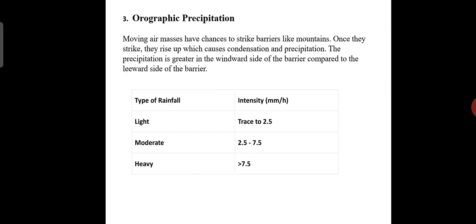Orographic precipitation. Moving air masses have a chance to strike barriers like mountains. Once they strike, they rise up, which causes condensation and precipitation. The precipitation is greater on the windward side of the barrier compared to the leeward side of the barrier.